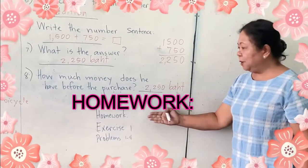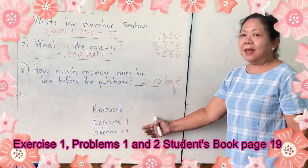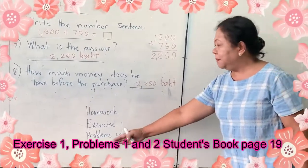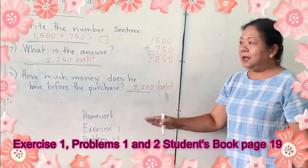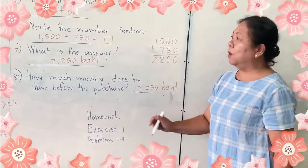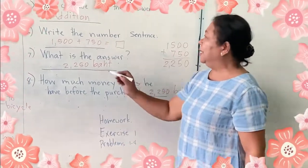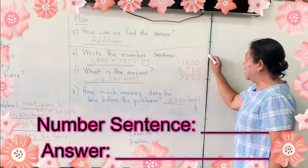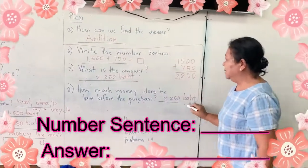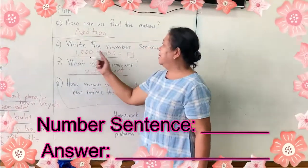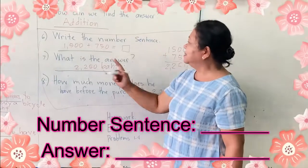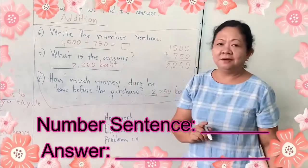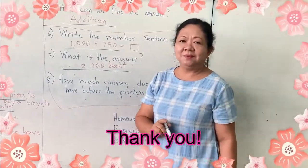For your homework, you will answer exercise 1, problems 1 to 4. You will only need to do steps 6, 7, and 8 — just write the number sentence and the answer. That's all. Thank you.